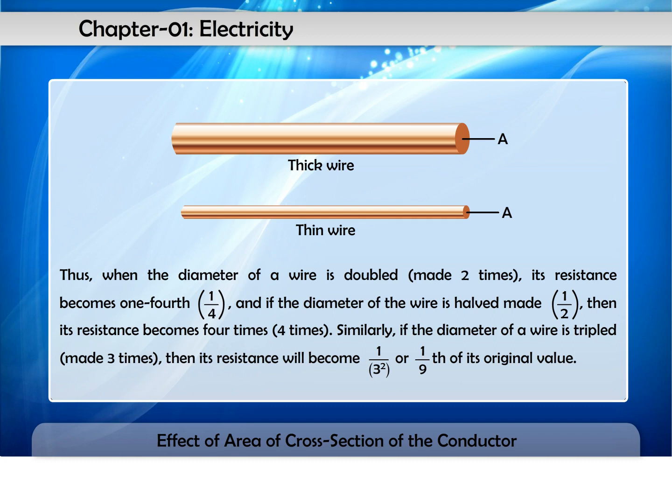When the diameter of a wire is doubled, made two times, its resistance becomes one-fourth, one upon four.